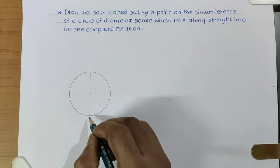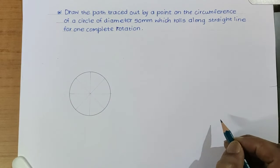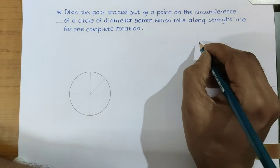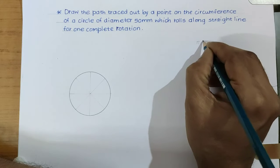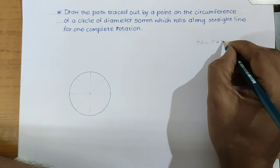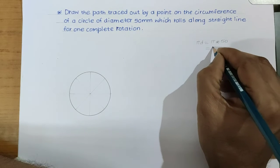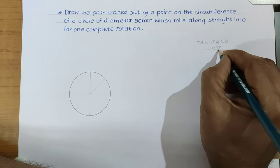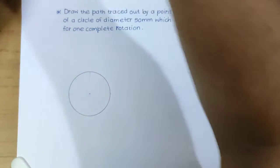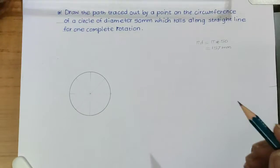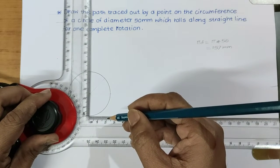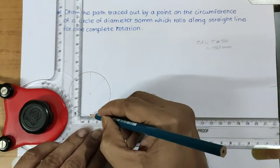The linear distance traveled by the circle would be equal to the circumference of the circle, that is π×D. Calculate this distance. Circumference π×D is equal to π into the diameter, which is 50 mm. Therefore it will give you 157 mm. So draw a horizontal line with distance equal to 157 mm.